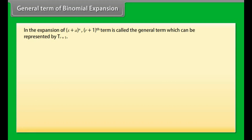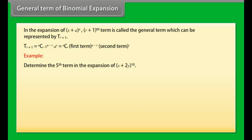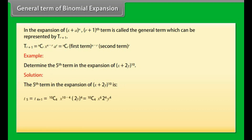General Term of Binomial Expansion: In the expansion of (x + a)ⁿ, the (r+1)th term is called the general term, represented by Tᵣ₊₁. Tᵣ₊₁ = nCr · x^(n−r) · aʳ = nCr · (first term)^(n−r) · (second term)ʳ. Example: Determine the 5th term in the expansion of (x + 2y)¹⁰. The result is 3360 · x⁶ · y⁴.